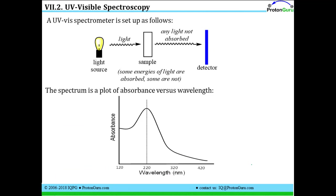This is how your spectrometer is set up. You have a light source capable of emitting light at a certain wavelength at a given time, and you know exactly how much light your source is producing. That light hits your sample, and any light that your sample doesn't absorb continues through and hits a detector, which reads out to a computer to tell you how much light at each wavelength your sample has absorbed. The UV-Vis spectrum is simply a plot of absorbance versus wavelength.